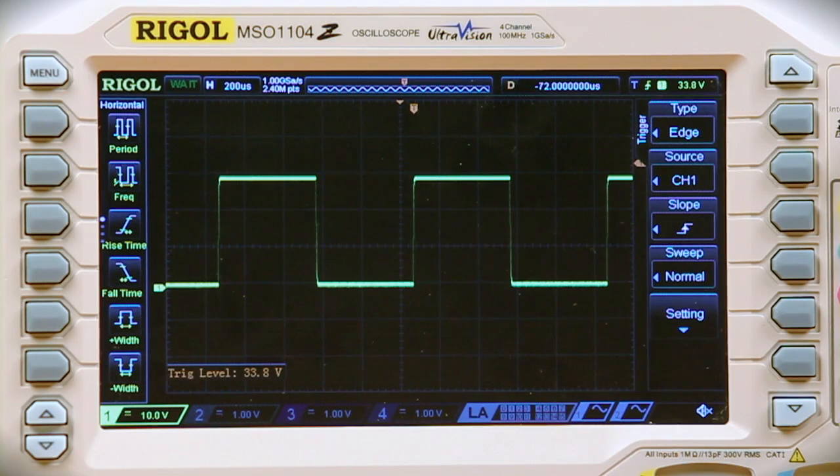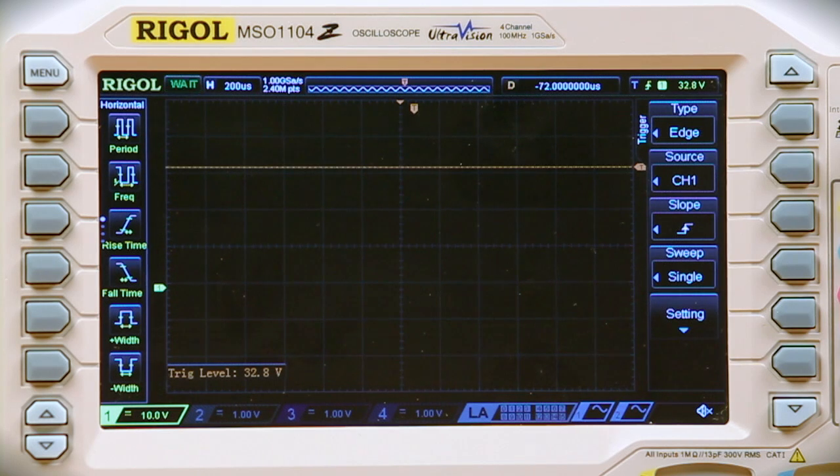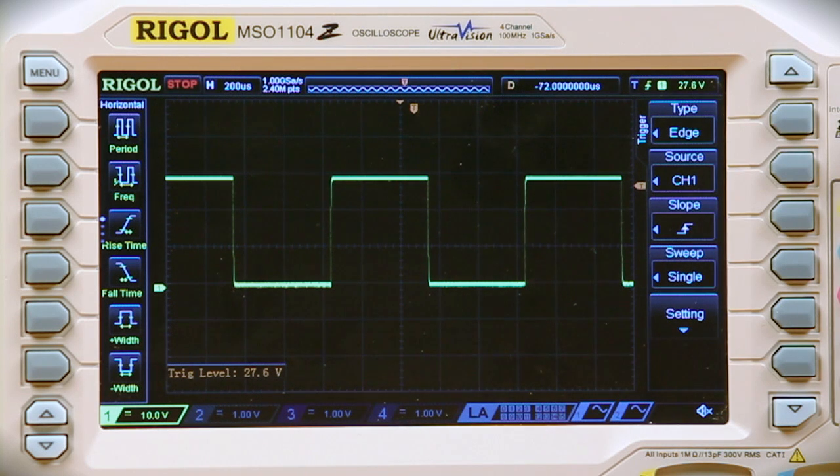And then finally, I can switch it over to the single, which it's not going to trigger until I bring the threshold down so it crosses the threshold. And then for this instance, if I move the threshold off, it's not going to continuously trigger or look for a new signal. It's just going to capture it and stop looking for more information.